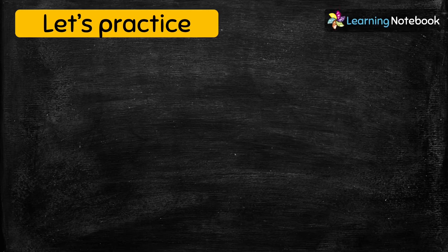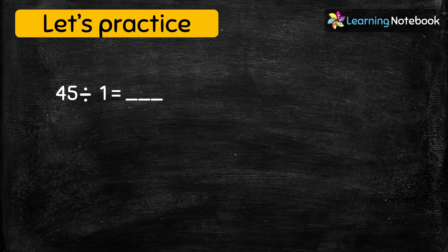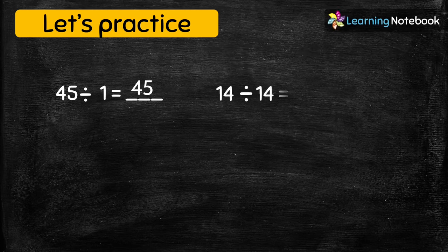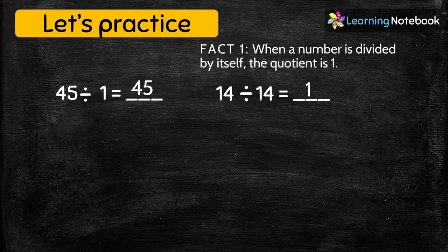Now let's do some questions based on these division facts. First: 45 ÷ 1 = ? The answer is 45, because when a number is divided by one, the quotient is the number itself. Next: 14 ÷ 14 = ? The answer is 1, because when a number is divided by itself, the quotient is 1.